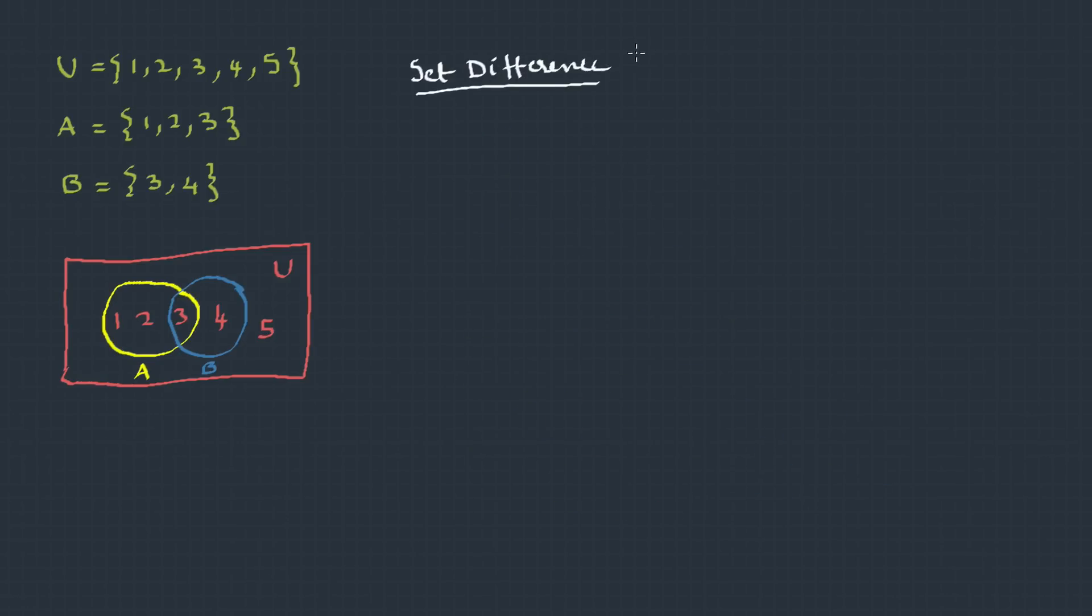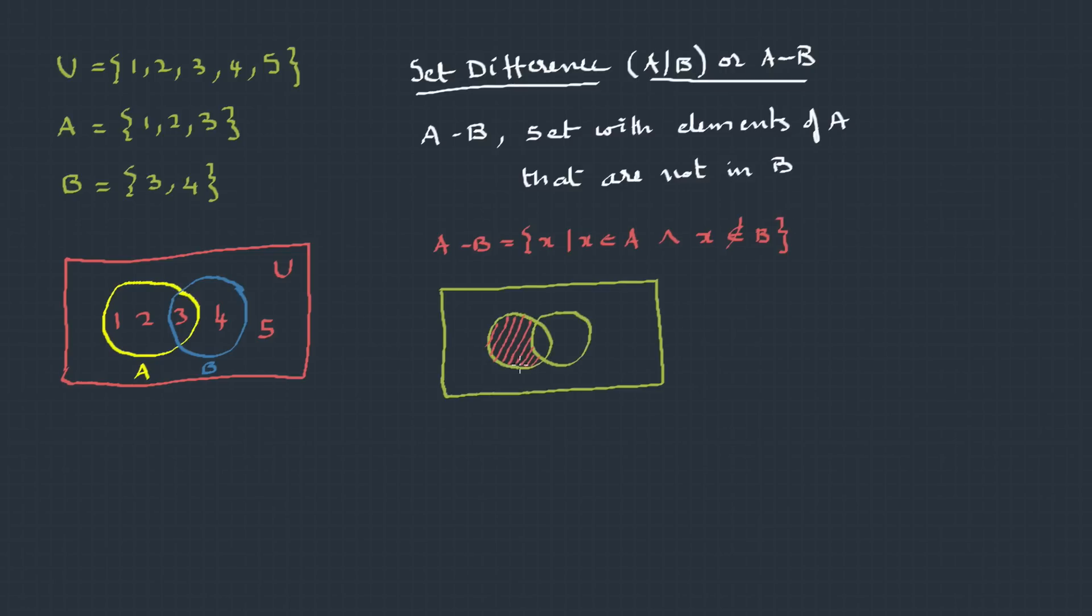Set difference. Few authors write it as A by B and few A minus B. I'll use A minus B. A minus B is a set with elements of A that are not in B. So A minus B is x such that x belongs to A and x does not belong to B.